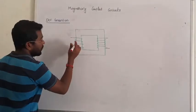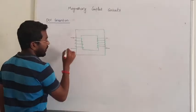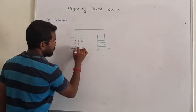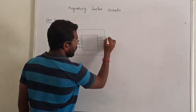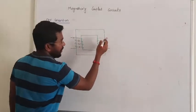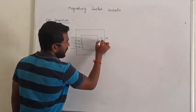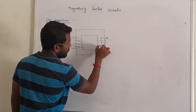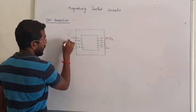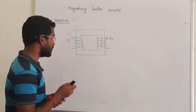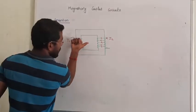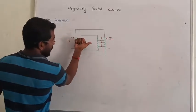Let me show you a transformer. When the current travels through the transformer, this is the direction of current i1 and this is current i2. That is a very simple process. Now let me apply the right-hand thumb rule.